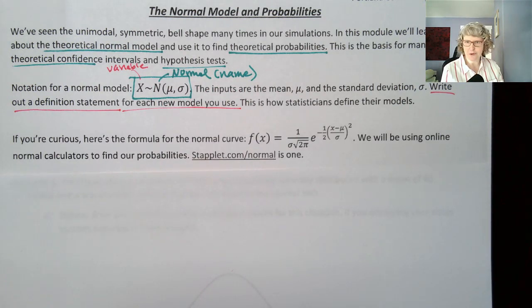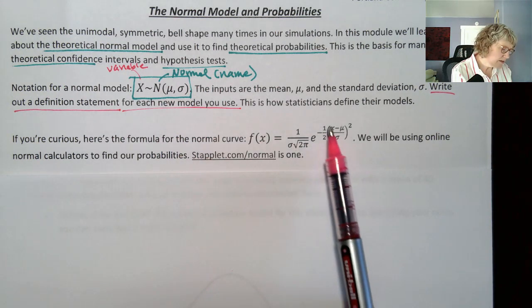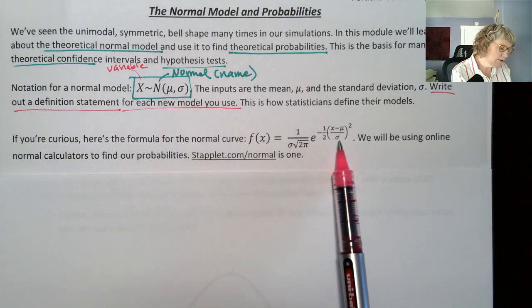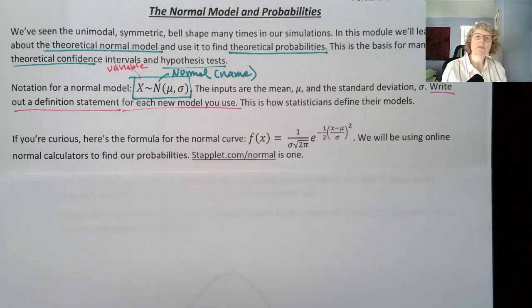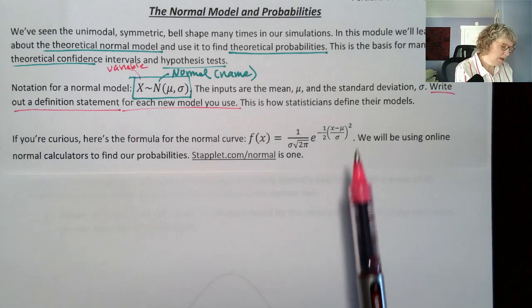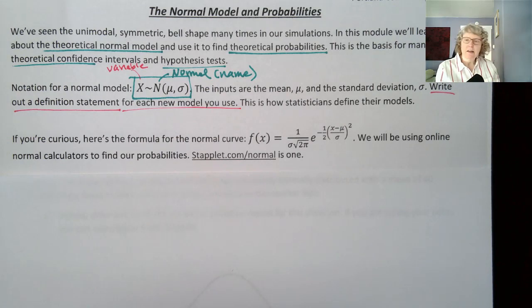If you're curious, this is the formula for a normal curve. So if you were to put this into a graphing utility, like desmos.com or a graphing calculator, you would see that bell-shaped curve. It's very complicated. It's an exponential, and the inputs are the mean and the standard deviation. You might even recognize there's a z-score in there, the x minus the mean over the standard deviation. We're not going to use that because it would also involve calculus, like finding the area under a curve.